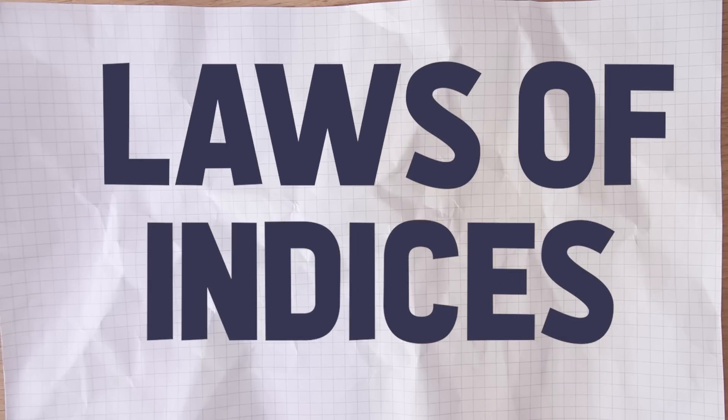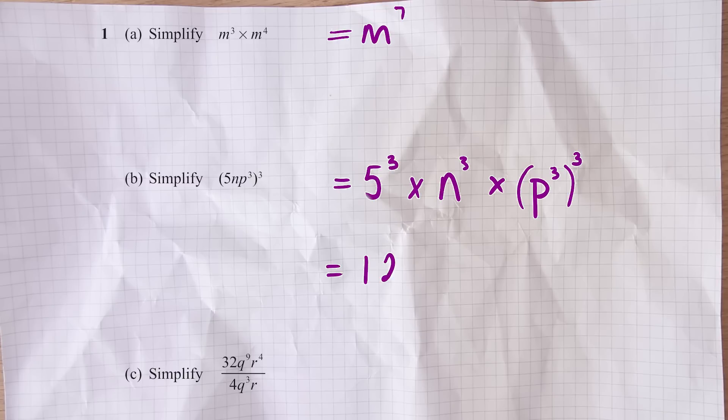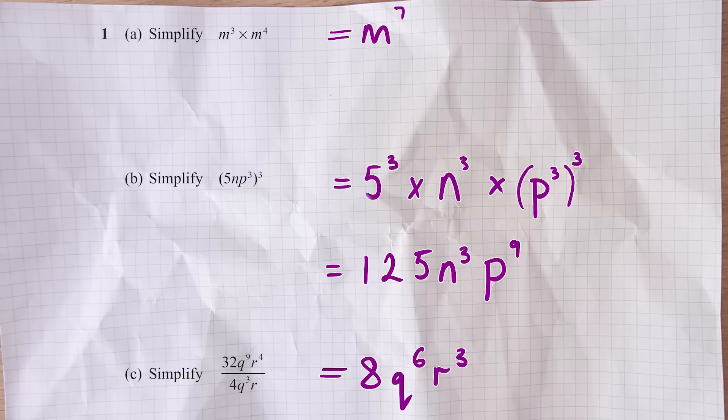Next up is Laws of Indices. This is one that could just as easily have been in the non-calculator paper, but it didn't seem to come up. The key type of question involves understanding that when you are multiplying numbers together, the index numbers just get added. It's reasonably straightforward - it's just a matter of remembering those rules.